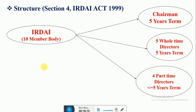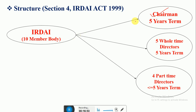In this introductory video, we'll see what IRDAI is in a brief, synoptic way. IRDAI is basically a 10-member body. It consists of a chairman whose tenure is five years. The chairman is eligible for reappointment if the central government thinks he must continue in office.